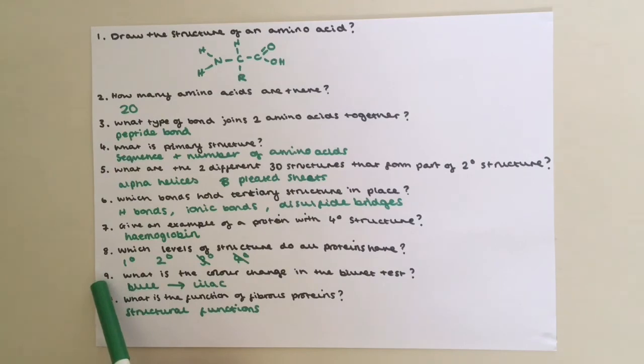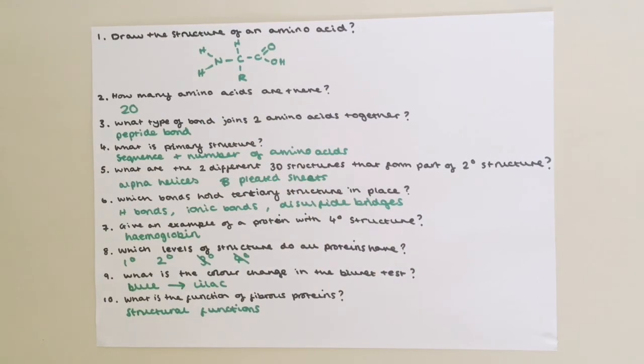Question nine: What is the colour change in the Biuret test? It is blue to lilac. And question ten: What is the function of fibrous proteins? They have structural functions, which is different from globular proteins which have metabolic functions. Thank you for watching and I hope you found it useful.